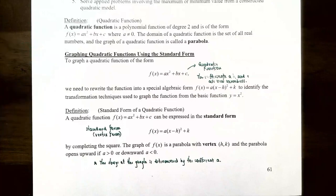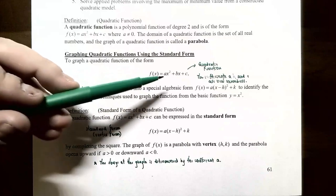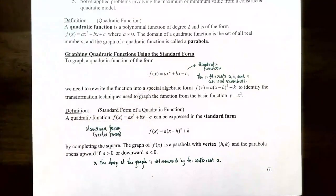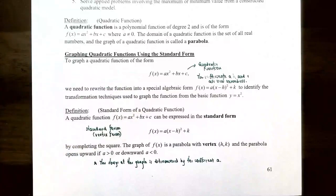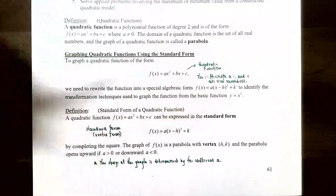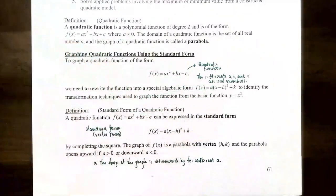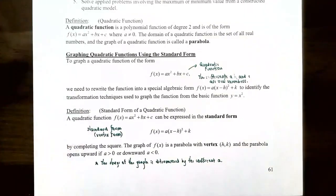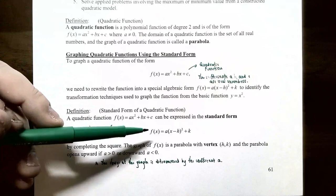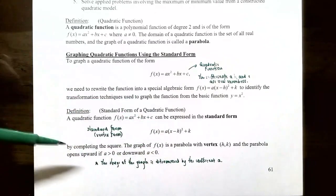To graph a quadratic function f(x) = ax² + bx + c, we rewrite it in standard form (also called vertex form): f(x) = a(x − h)² + k, by completing the square. This form allows us to identify the vertex, axis of symmetry, shape of the graph, and transformations from the basic quadratic y = x².